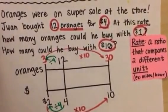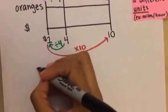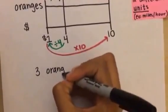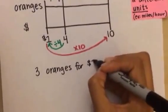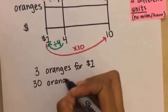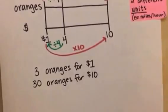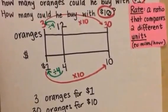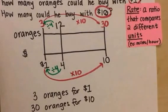Which means that with ten dollars he could buy thirty oranges. So there you go, those are your answers. For one dollar he could buy three oranges, and he could buy thirty oranges for ten dollars. And there you go, how to solve a rate problem using a double number line. Please leave a comment or subscribe if you like this. Let me know, thank you, and have a great day.